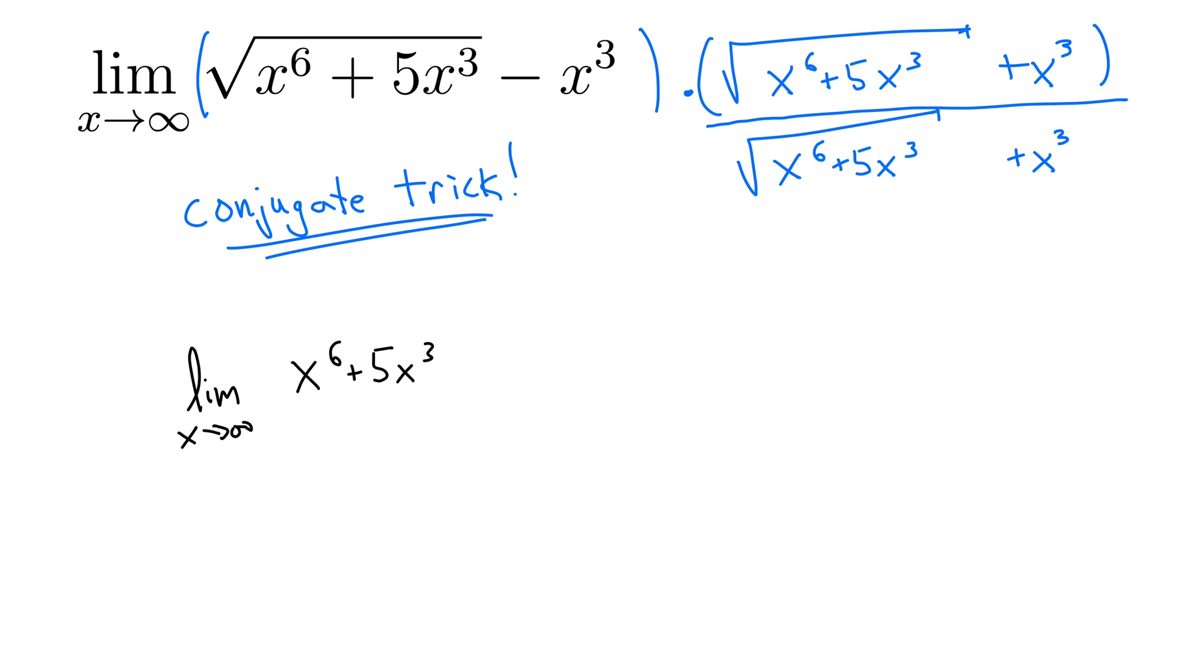Note that the outside and inside terms will always cancel out. That's why the conjugate trick is so great. And then we have negative x cubed times x cubed, which is simply minus x to the 6th. All over, what do we have down below?